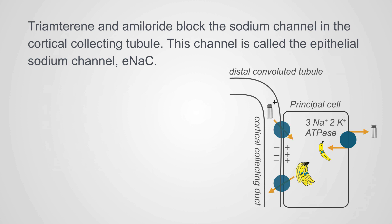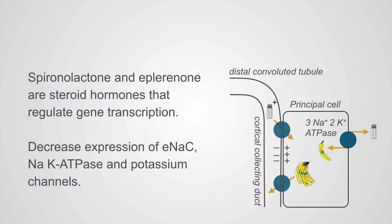Triamterene and amiloride block the sodium channel in the cortical collecting tubule. This channel is called the epithelial sodium channel, or ENaC, and is essential for the secretion of potassium. If it is blocked, no potassium can be secreted by the principal cell. Spironolactone and eplerenone are steroid hormones that regulate gene transcription. They decrease the expression of ENaC, sodium-potassium ATPase, and the potassium channels required for potassium excretion in the principal cell.